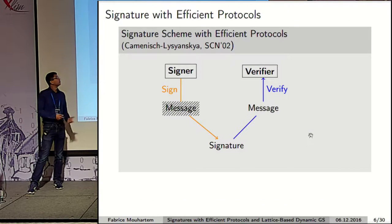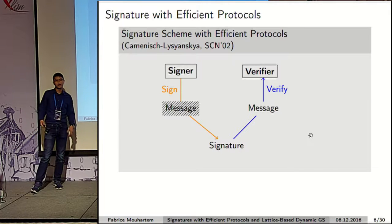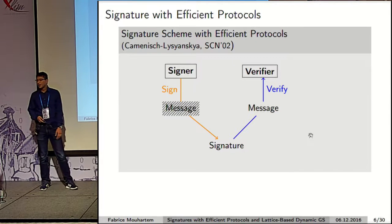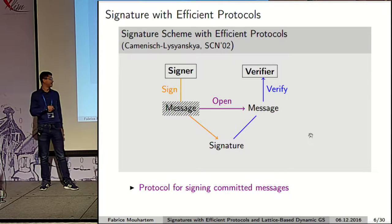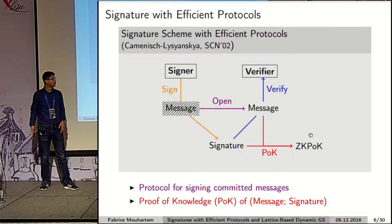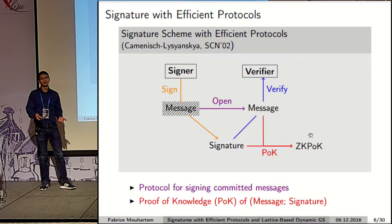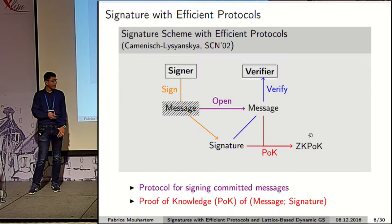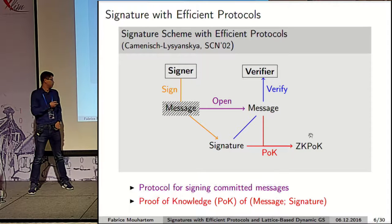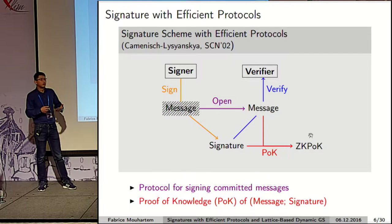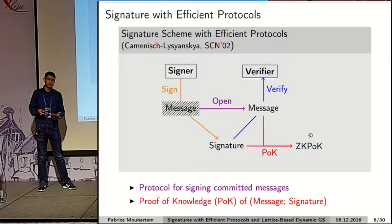Why I tell you about this primitive is that to construct it, we have a general construction based on the signature with efficient protocols we construct in this paper. Signature with efficient protocols are basically a signature scheme with efficient protocols: one protocol to sign a message on a committed value, and another protocol to prove knowledge of a valid message-signature pair.